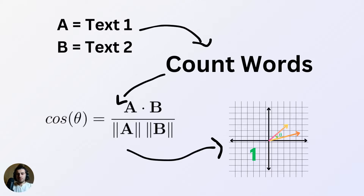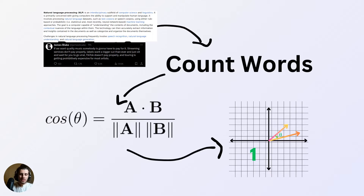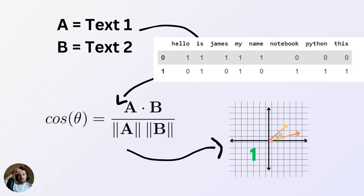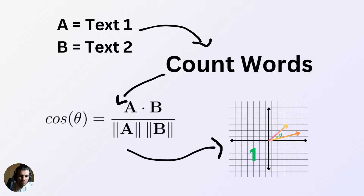A more general example you may encounter much more often is textual data. You have two texts and you want to compare them to see how similar they are — very useful for NLP. What you do is a count vectorizer approach where you count the occurrence of every word in each of the two texts and create a big vector. This gives you vector A and vector B, and then you plug into the formula to get the angle between them. Cosine similarity can be used for any sort of data as long as you can create the vector.